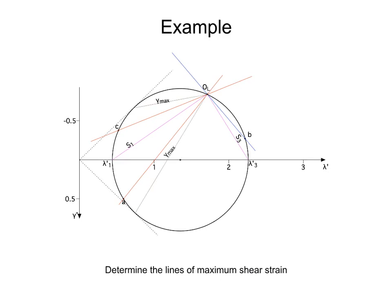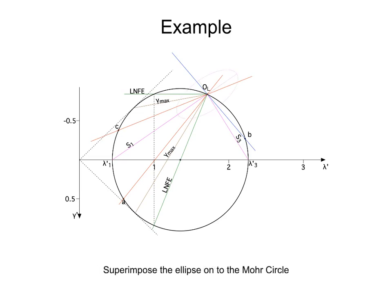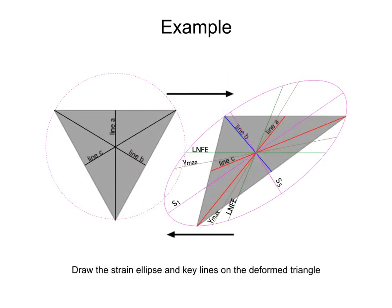Likewise, from the pole we can trace lines to the points of tangency of lines from the origin with the circle. These lines from the pole are the direction of maximum angular shear and shear strain. Then, we can trace lines from the pole to points on the Mohr Circle with lambda prime equal to 1. These lines from the pole are the lines of no finite elongation. To make things more clear, we can draw the strain ellipse centered at the pole, where S1 is 1.5 and S3 is 0.67. Finally, we can transfer the strain ellipse to the deformed triangle. Note that one of the lines of no finite elongation is horizontal — this makes sense, since for simple shear, lines parallel to the shear zone boundaries do not change in length during deformation.